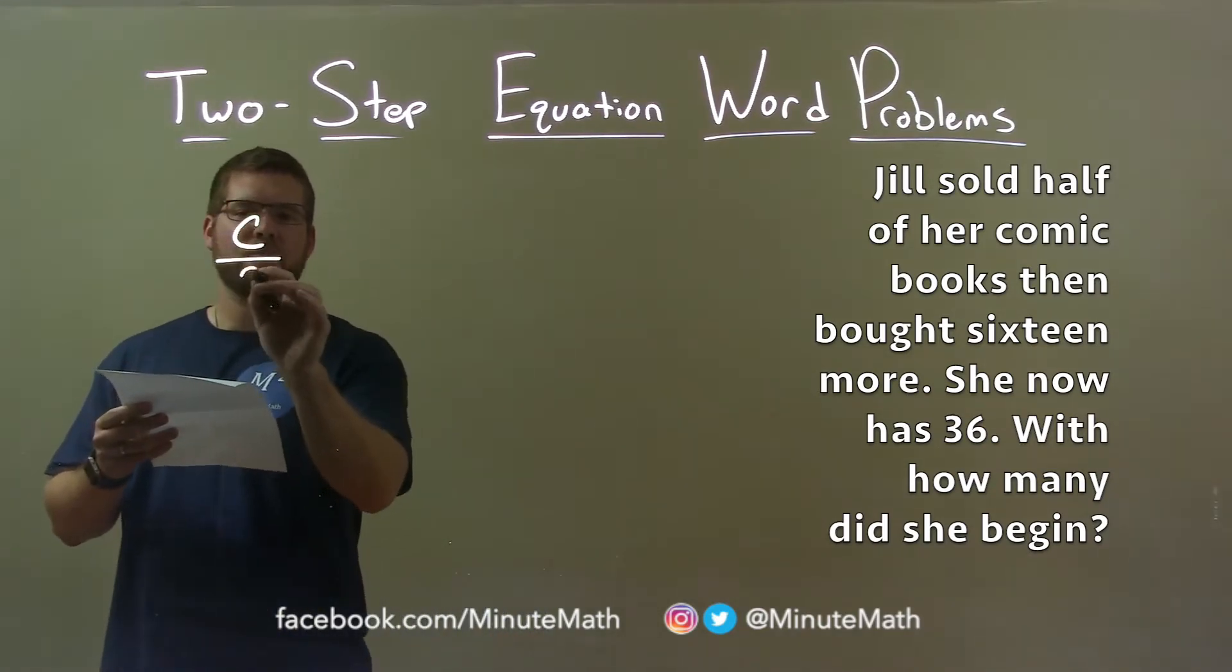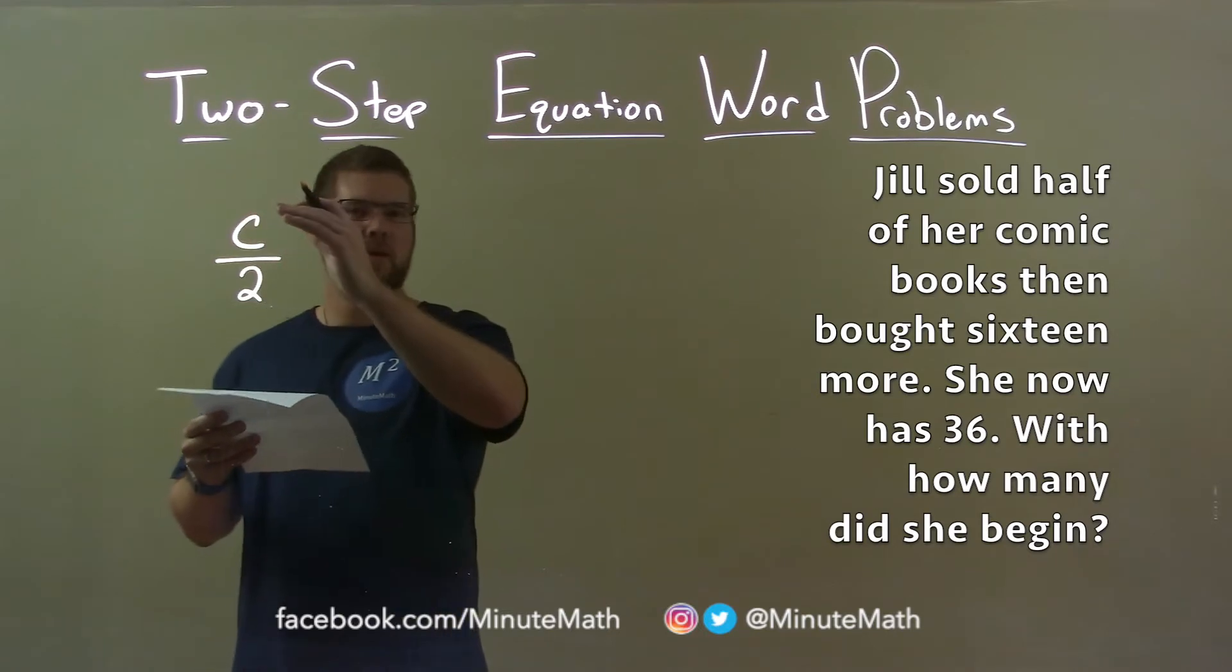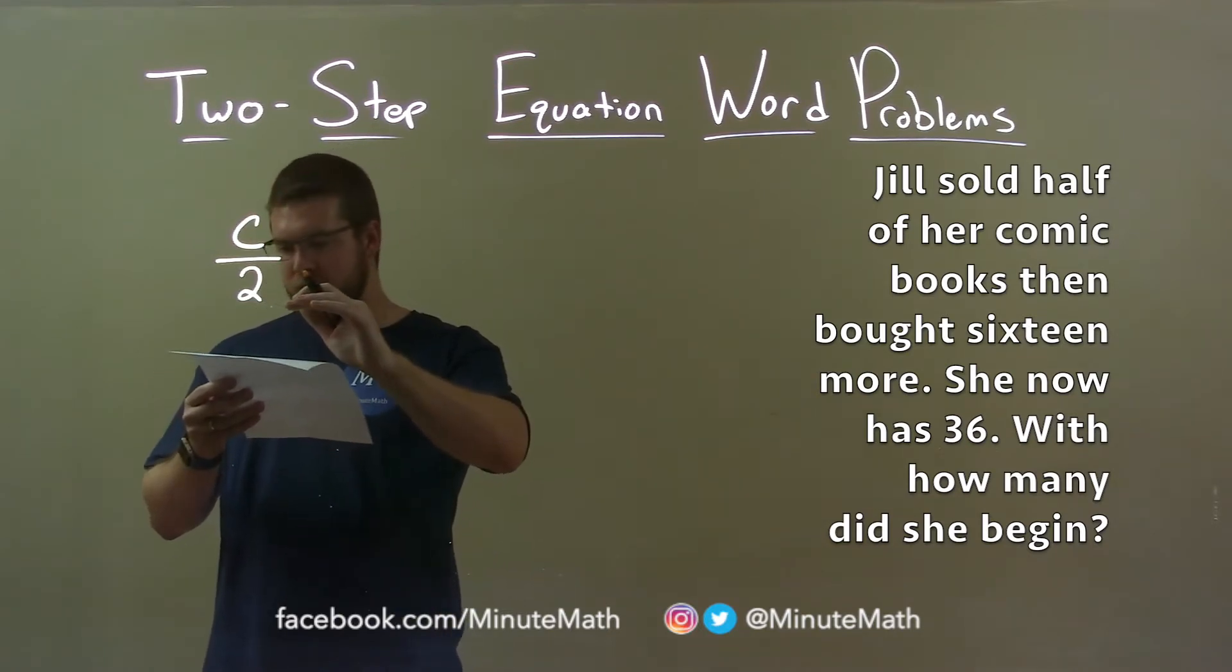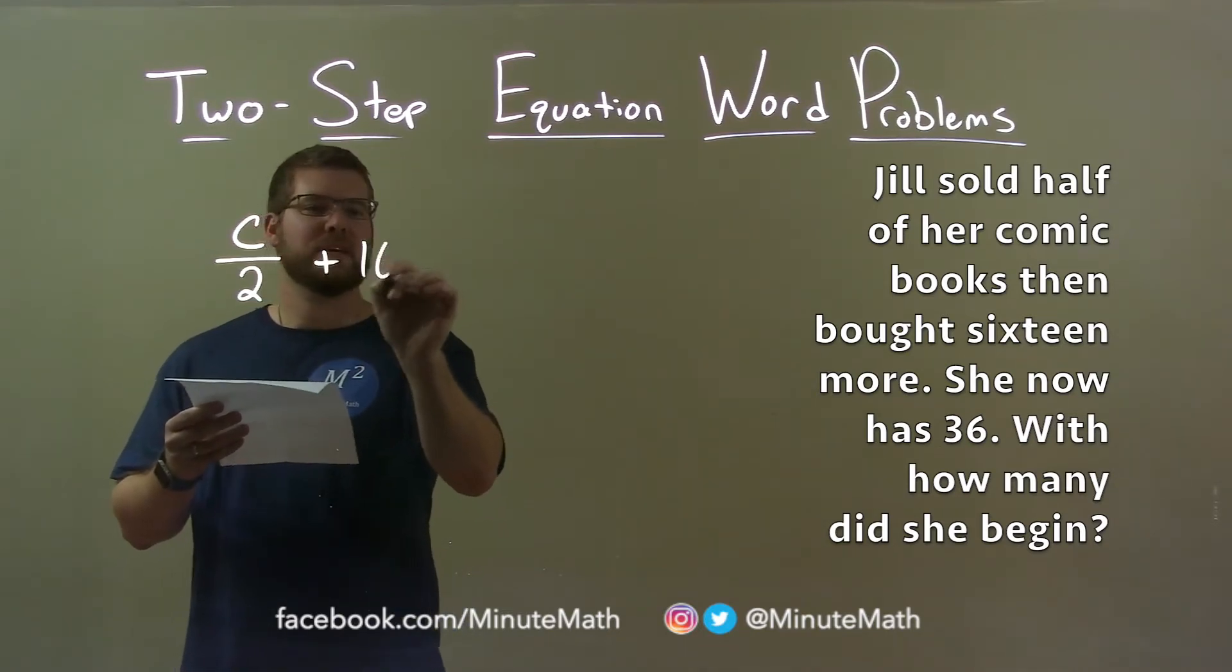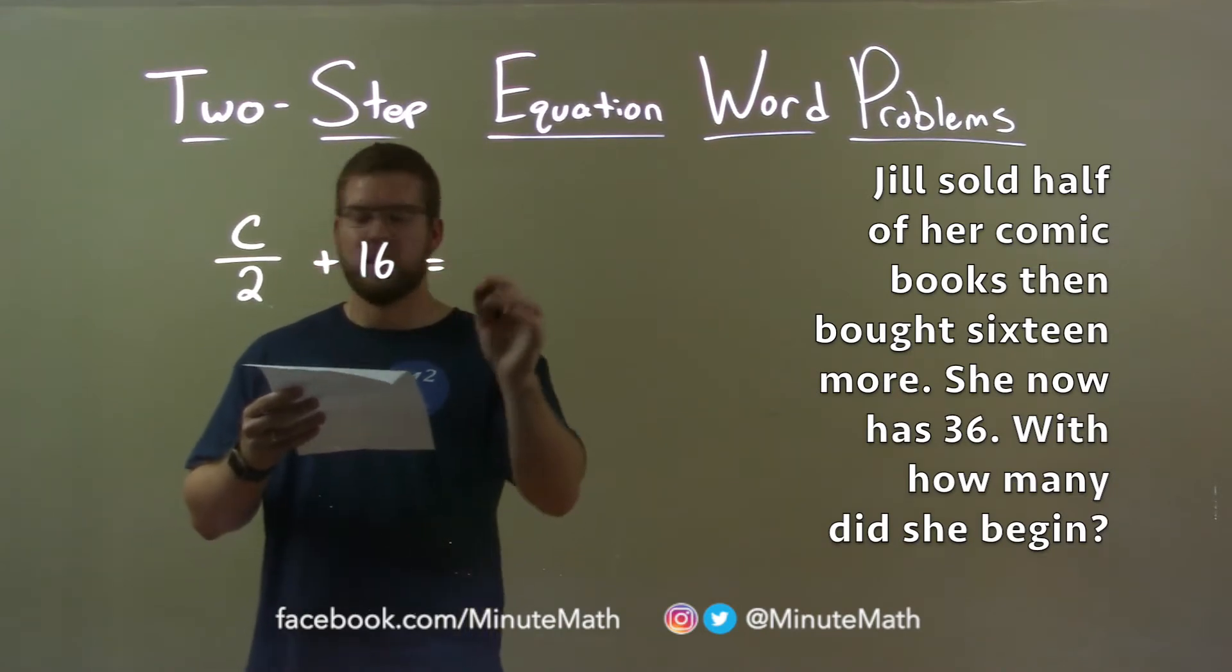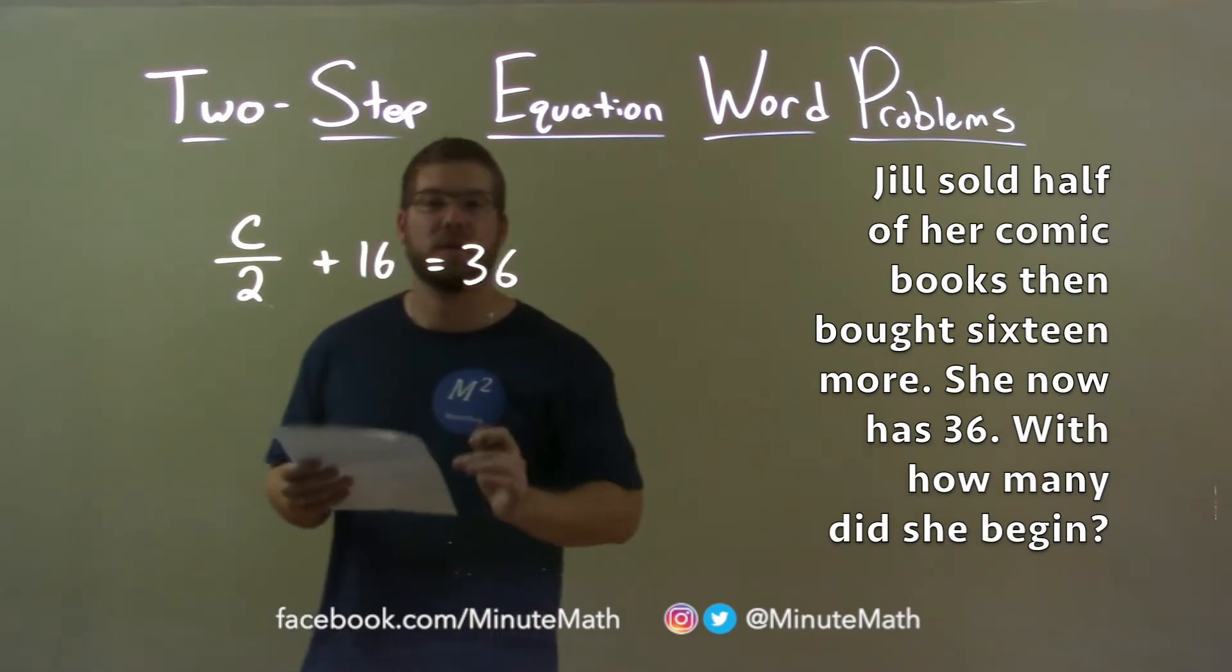They told us that she sold half of those books, right? So take the initial starting amount, we sold half of it, divided it by two, and then bought 16 more. Now, when it's all said and done, she has 36 comic books.